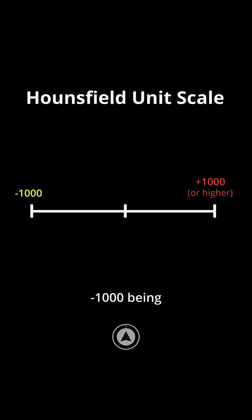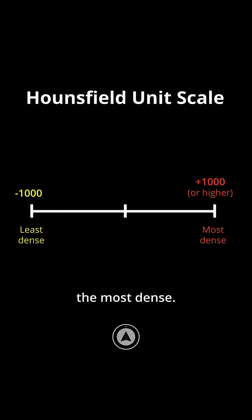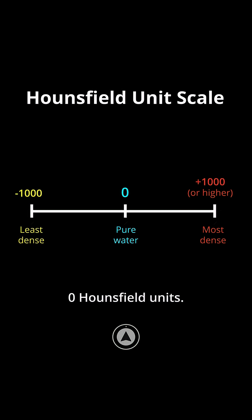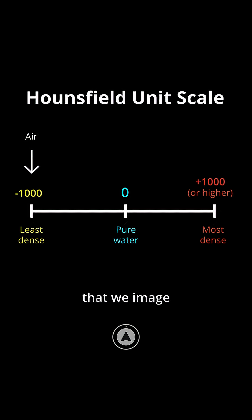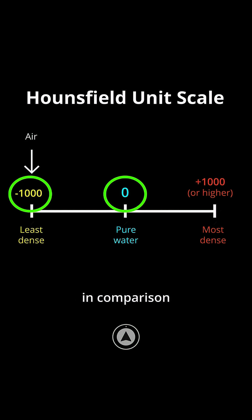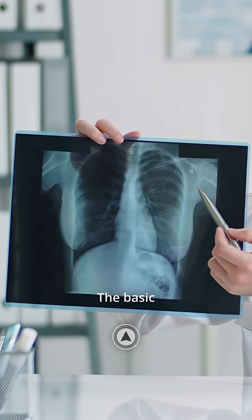Negative 1,000 being the least dense and positive 1,000 being the most dense. By convention, pure water is assigned a value of 0 Hounsfield units. Also by convention, air is assigned a value of negative 1,000 Hounsfield units. Everything else that we image is calculated in comparison to these two numbers.